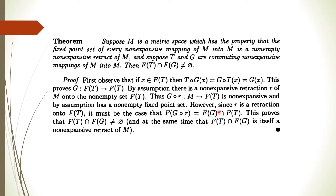Since these two sets are equal, and by our assumption we get at least one point which is a fixed point — a member of this set — therefore the intersection FT ∩ FG is non-empty. This is what we had to prove. Moreover, FT ∩ FG is also a non-expansive retract of M, because it equals F(G∘R), and G∘R is a non-expansive retract of M.